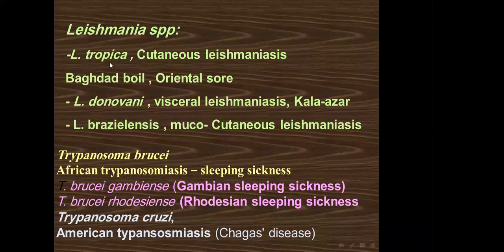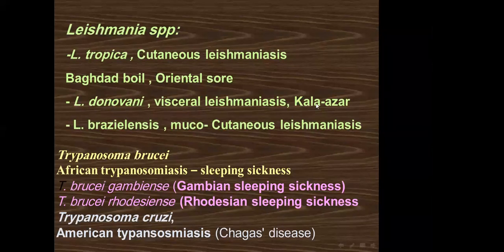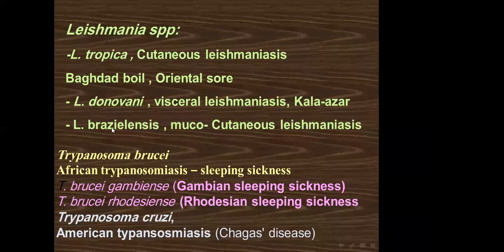Leishmania tropica causes cutaneous leishmaniasis, commonly known as Baghdad boil, Oriental sore, or Delhi sore. Leishmania donovani causes visceral leishmaniasis, also called kala-azar or black fever, and Dum-Dum fever. Leishmania braziliensis causes mucocutaneous leishmaniasis, commonly known as Espundia or Uta.